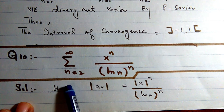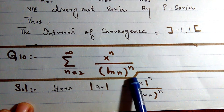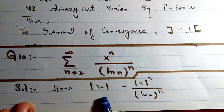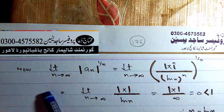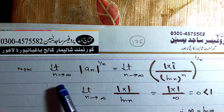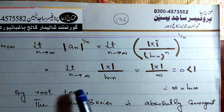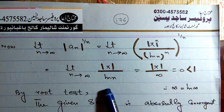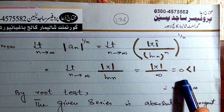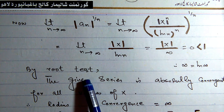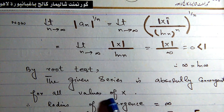Question 10: Summation of x^n over (ln n)^n. We take its absolute value: |x|^n over (ln n)^n, and apply the root test.